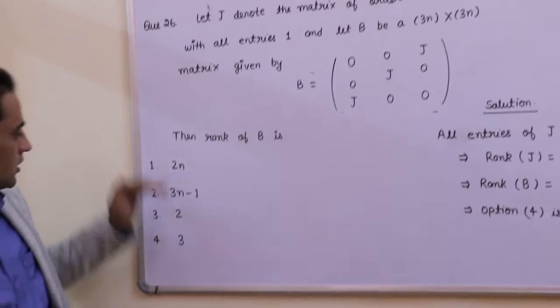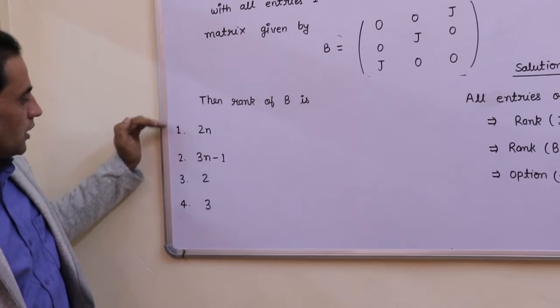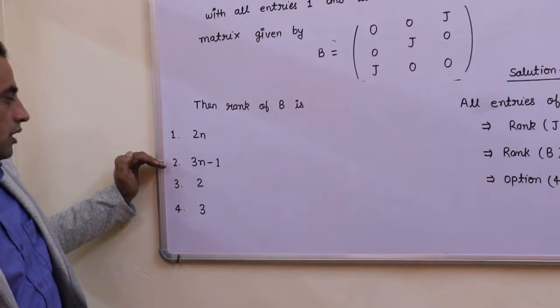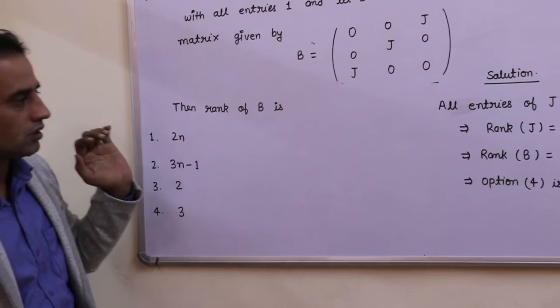Now rank of B is - these are the options. First option is 2N, second option is 3N minus 1, third option is 2, and fourth option is 3.